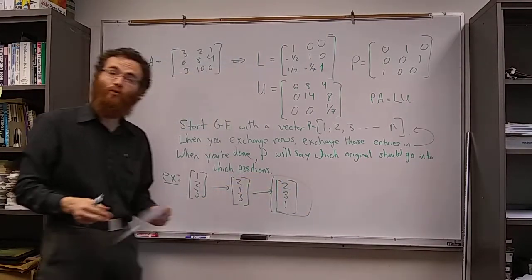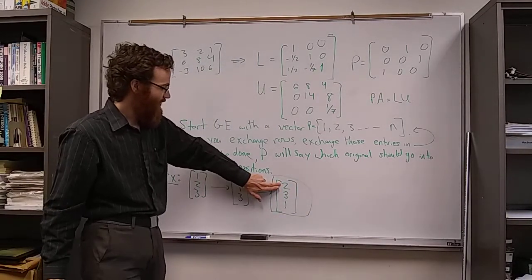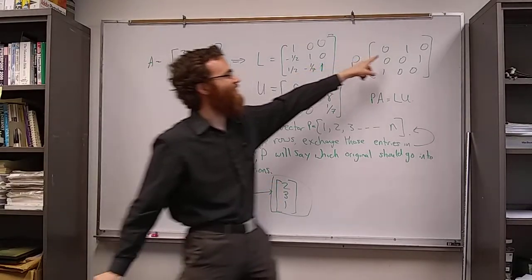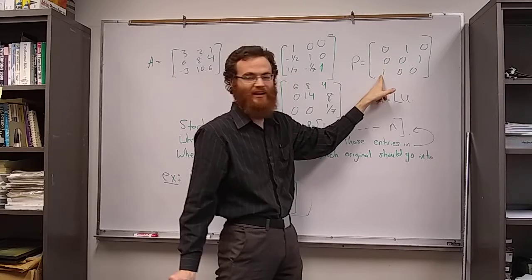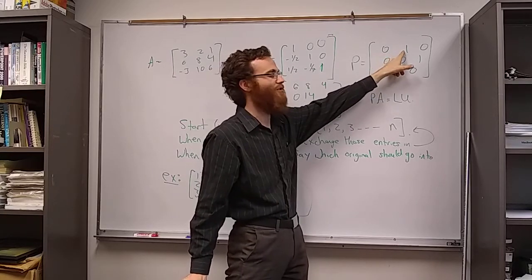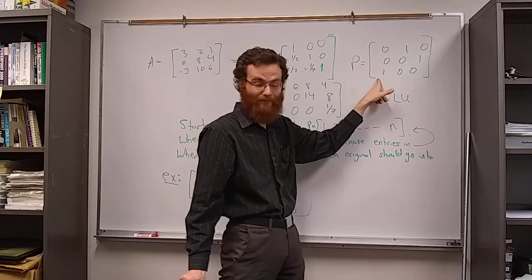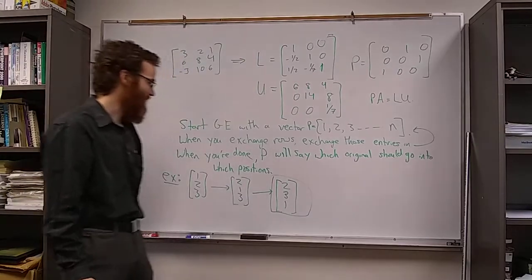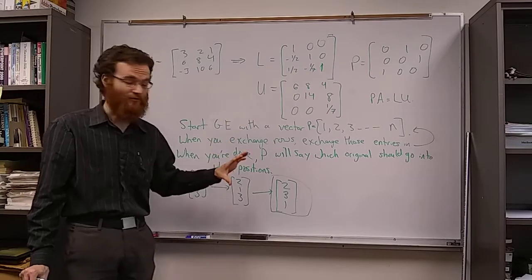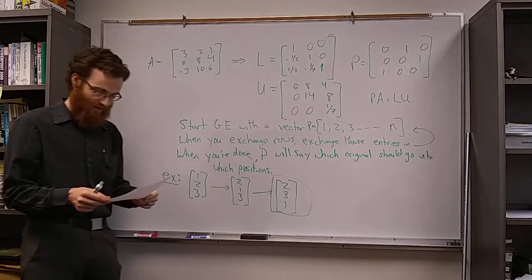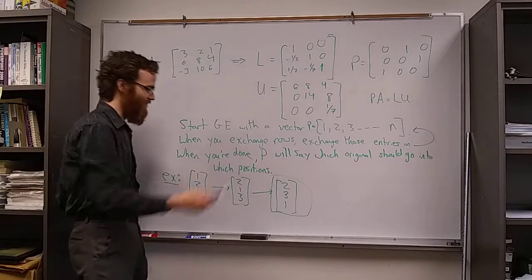is how we can store our P. Notice that 2, 3, 1 tells us—one way to think about it is it tells us where the 1 is in the permutation matrix: the second column, the third column, and the first column in that order. But it's a vector instead of a matrix, so you're saving a lot of storage room.